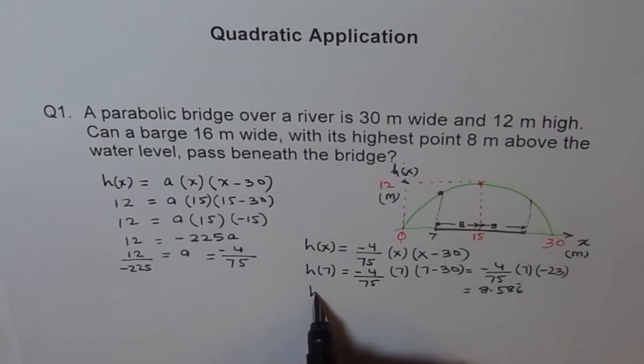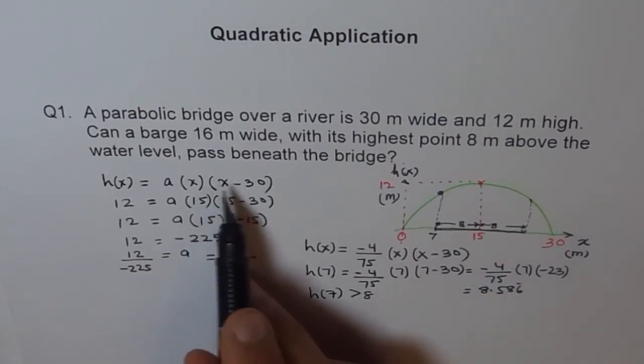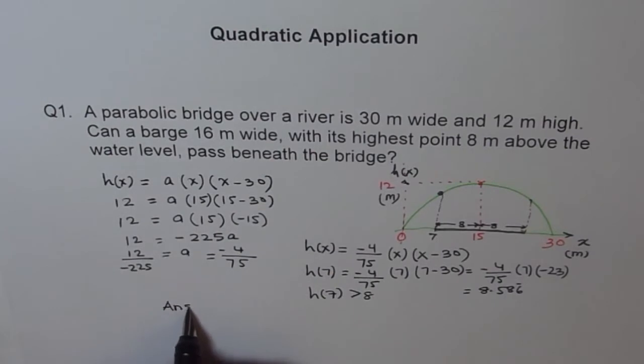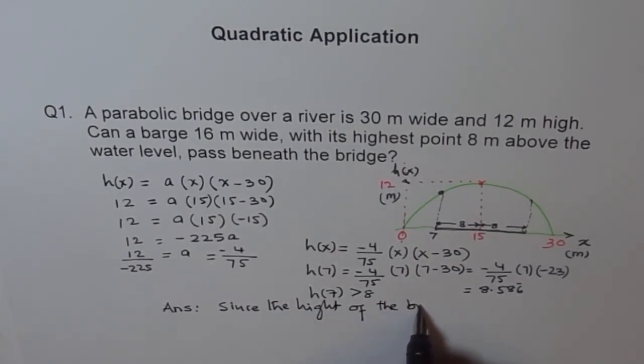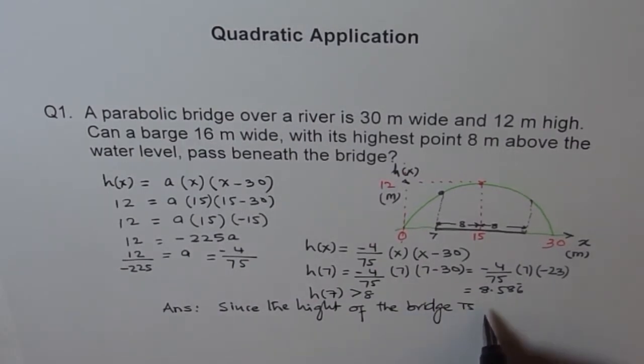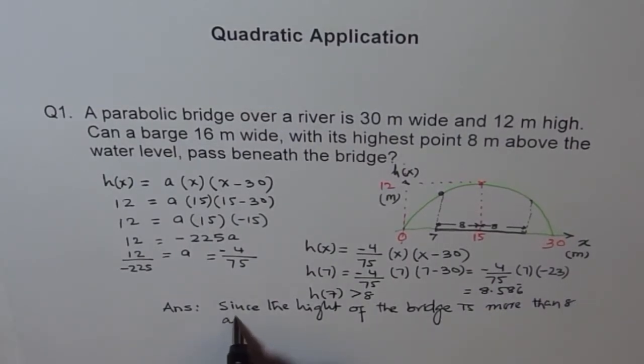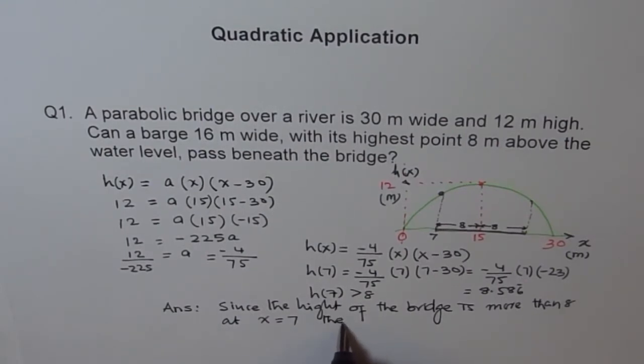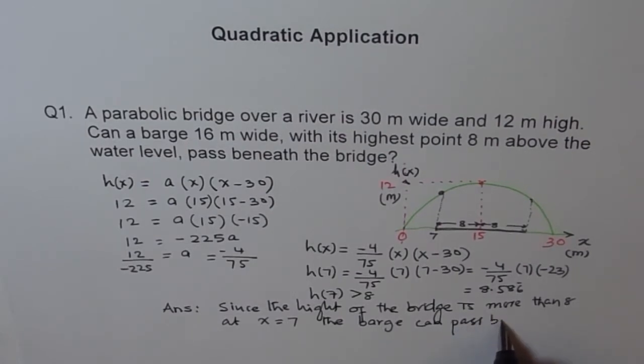Since H of 7 is greater than 8, the barge can pass beneath the bridge. So therefore, the answer is since the height of the bridge is more than 8 at x equals to 7, the barge can pass beneath the bridge.